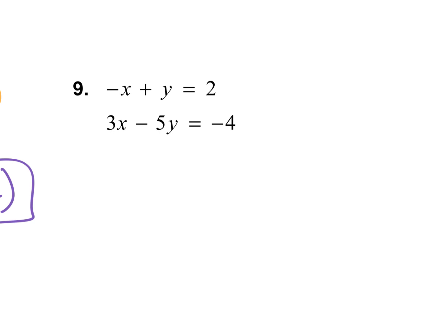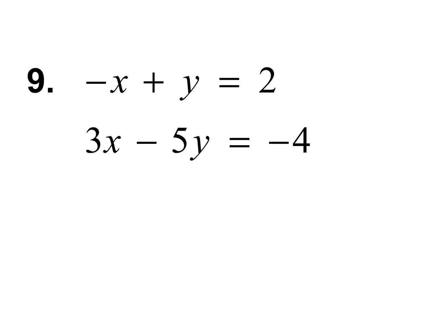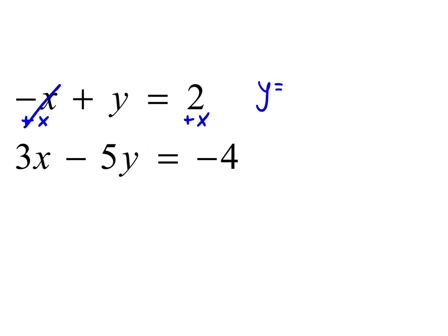Looking at number 9 — do we have an x equals or y equals? Not yet. Let's make one of them x equals or y equals. Which equation? The first one is a great choice. The second one we don't really like because we'd have to move a variable and then divide, giving fractions. In the first equation, both variables have a coefficient of 1, so that's better. Let's make it y equals — add x to the other side. So y equals 2 plus x. Anytime your coefficient is 1, stick with that variable and move the other one to the other side.